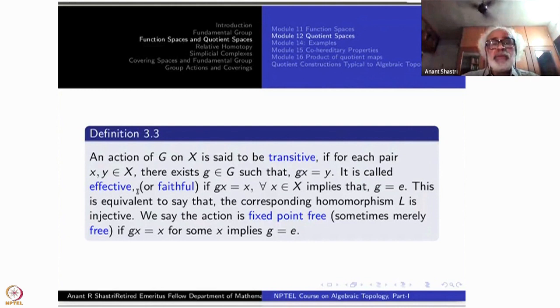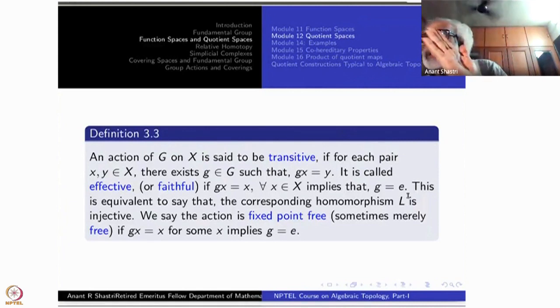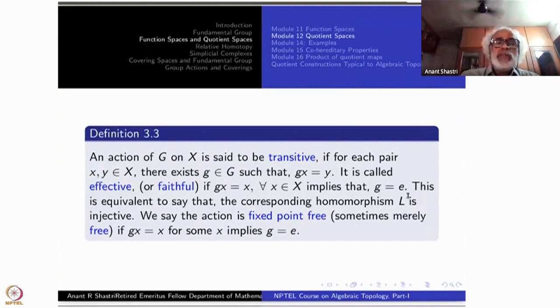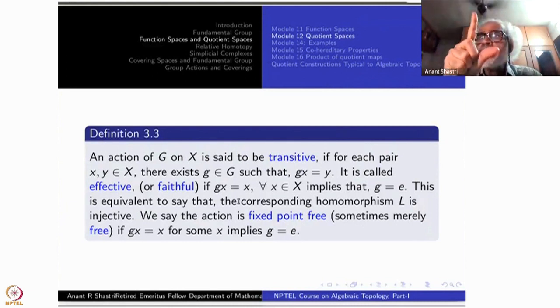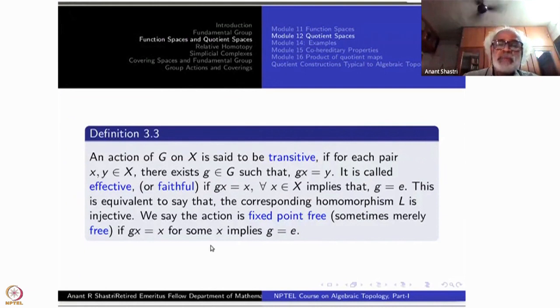Now the action is called effective, respectively faithful. If GX is X for every X implies G must be identity. What is the meaning of this? That every non-trivial element defines a non-trivial permutation. Some people call it faithful also. Just means that the corresponding homomorphism from G to Sigma X is an injection, it is a monomorphism. This equals saying the corresponding homomorphism is injective.